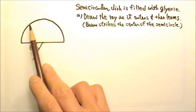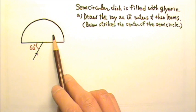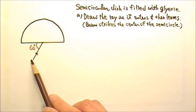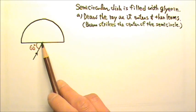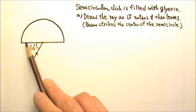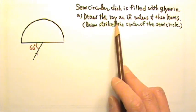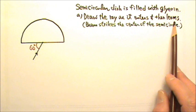A clear semicircular dish filled with glycerin is used to measure the index of refraction of glycerin. A laser beam strikes the dish at the center of the semicircle with a 60-degree angle to the flat side of the dish. Draw the light ray as it enters and then leaves the glycerin.